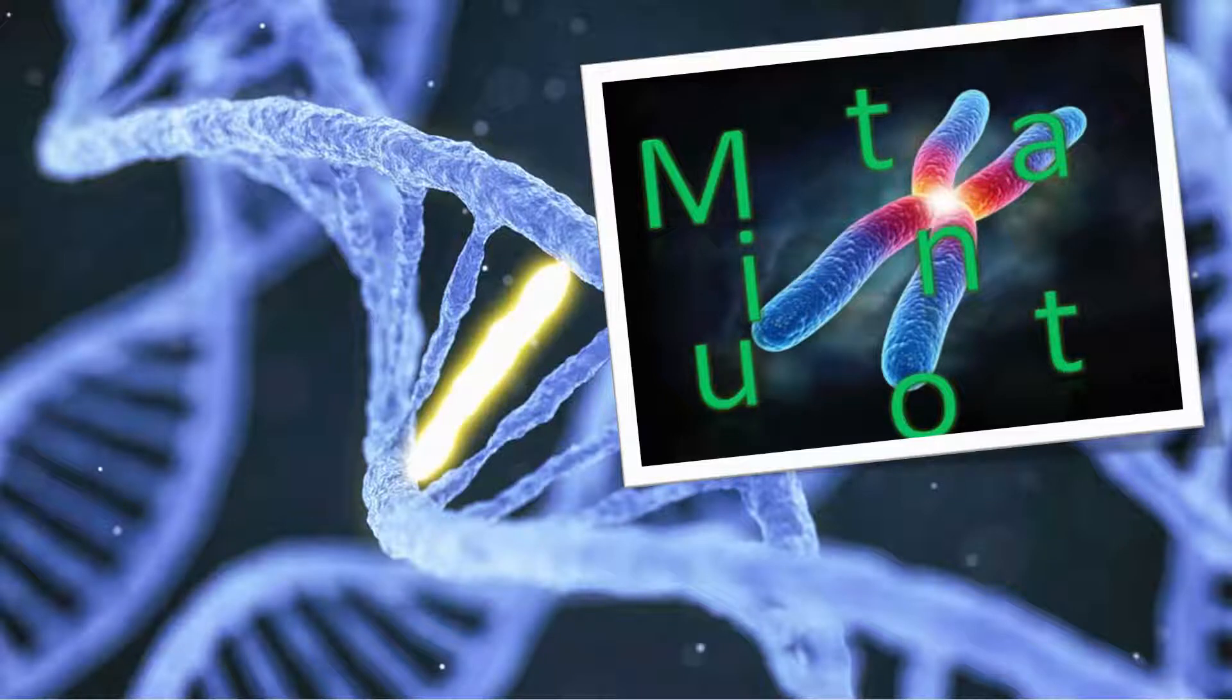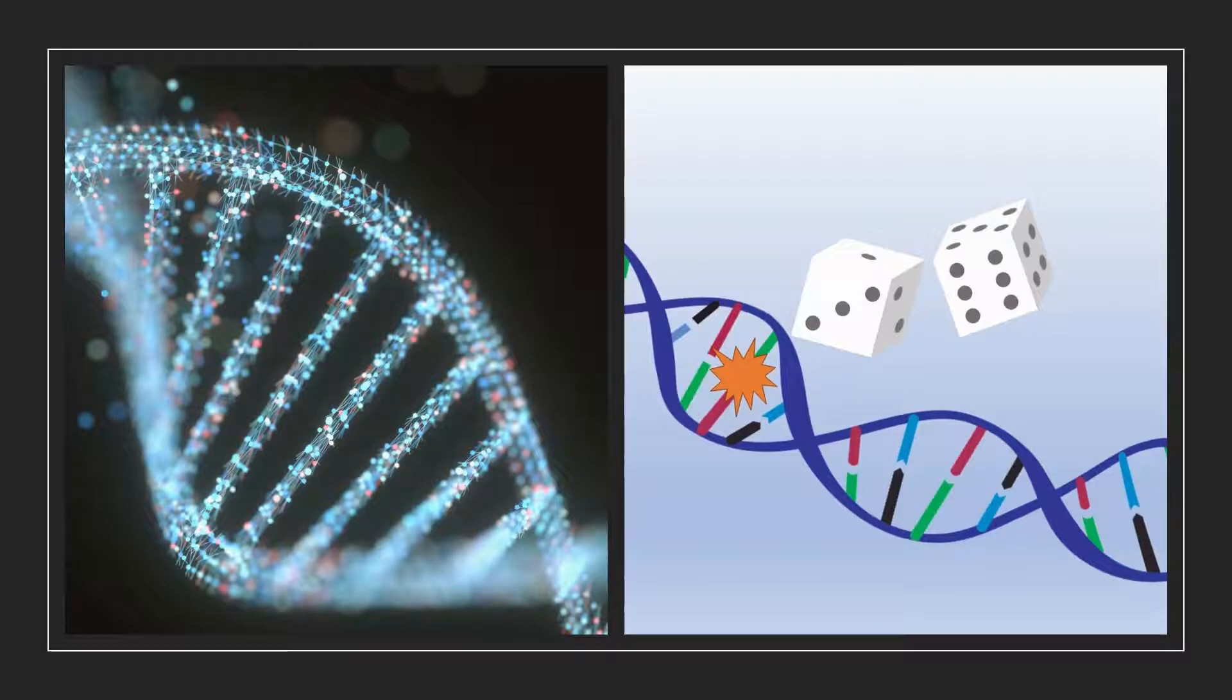So then what's up with all these different categories: beneficial mutation, harmful mutation? If this is truly a random process, then we should not be able to discern the difference between the two. Now we go back to things like cancer, right?